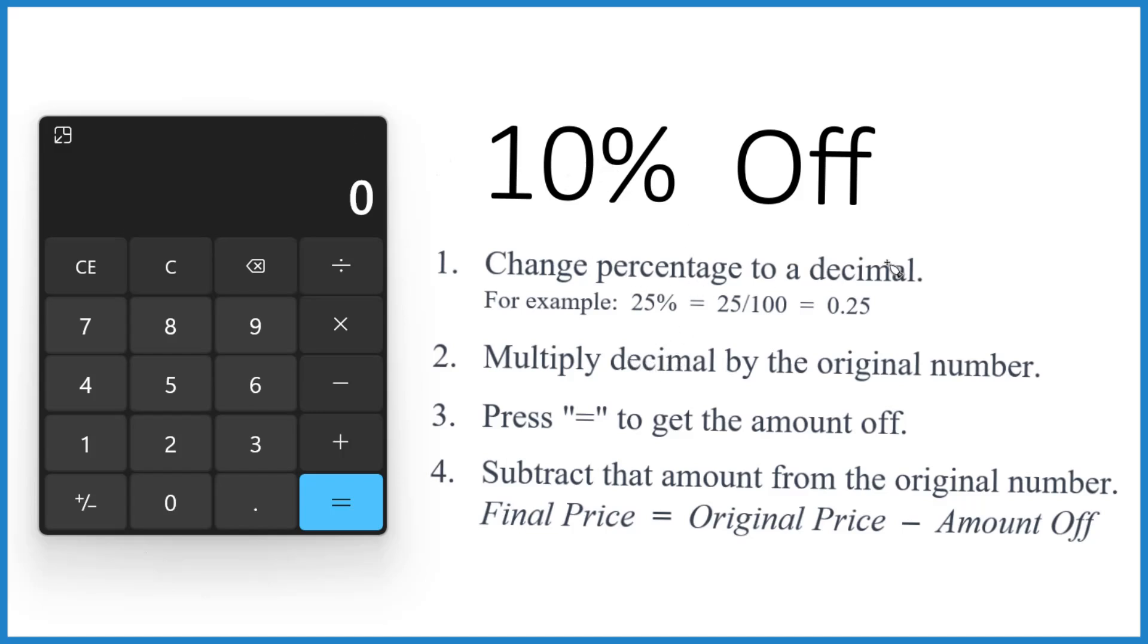You take the percentage and you change that to a decimal. And to do that, you just take the percentage, which is 10%, and you divide it by 100. And that gives you your decimal, 0.1.